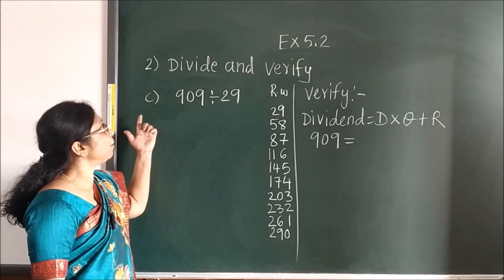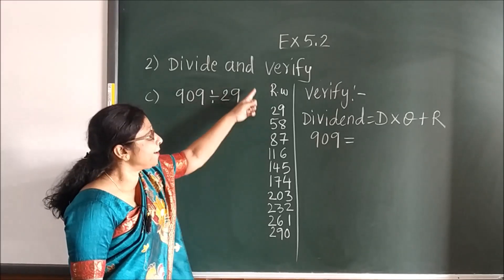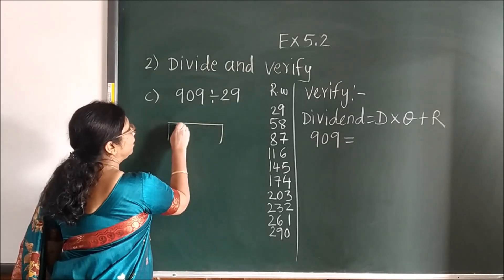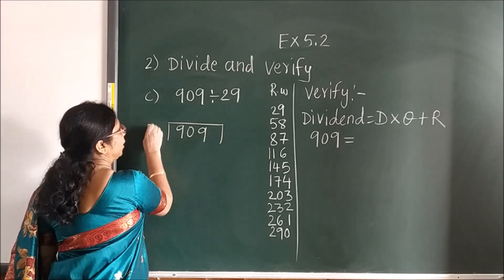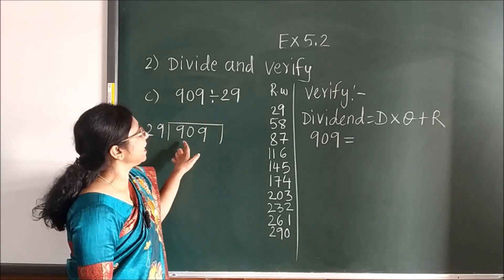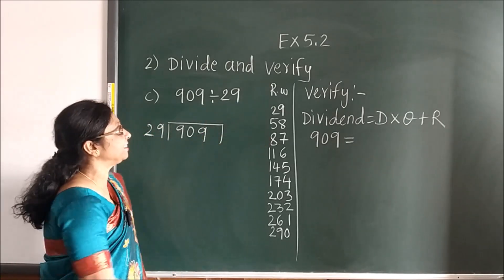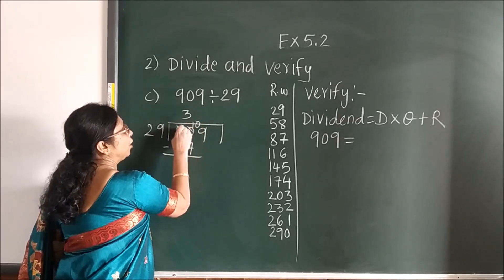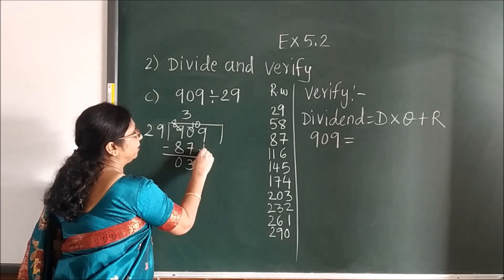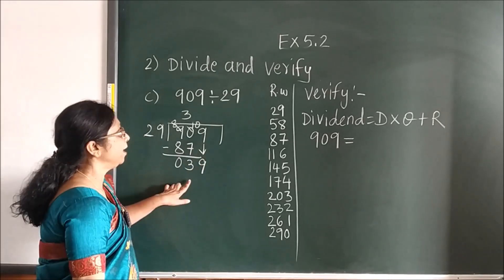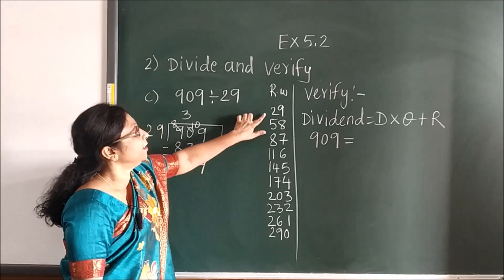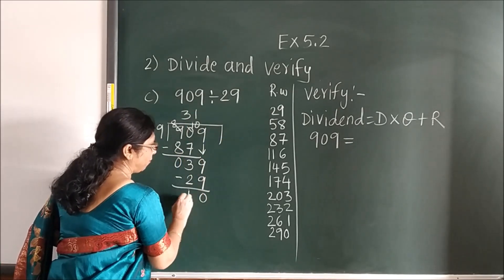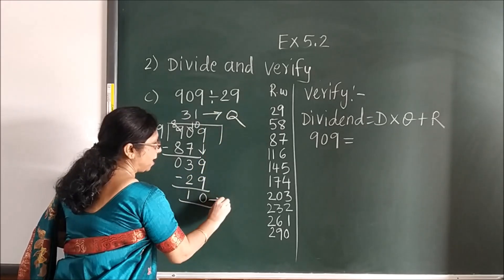Now in sum C: 909 divided by 29. I have written the table of 29. Less than 90 is 87, so 29 threes are 87. Subtract — you get remainder 3, bring the next number down — 39. Less than 39 is 29, so 29 ones are 29. Subtract — this is the quotient and this is the remainder.